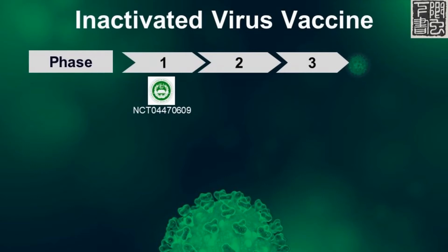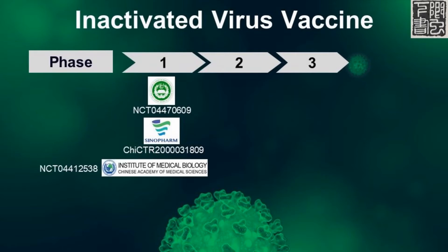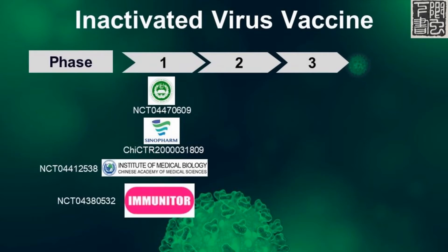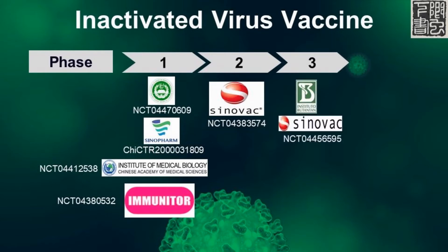Several companies are making inactivated COVID vaccines. The vaccine by the Chinese Academy of Medical Sciences is in Phase 1, and the vaccine by Sinopharm is also in Phase 1. The Institute of Medical Biology in China and Immuniter, a Canadian company, also have their respective vaccines in Phase 1. The Chinese company Sinovac has a vaccine in Phase 2, and is also testing its vaccine with the Buntantan Institute in Brazil in a Phase 3 trial.